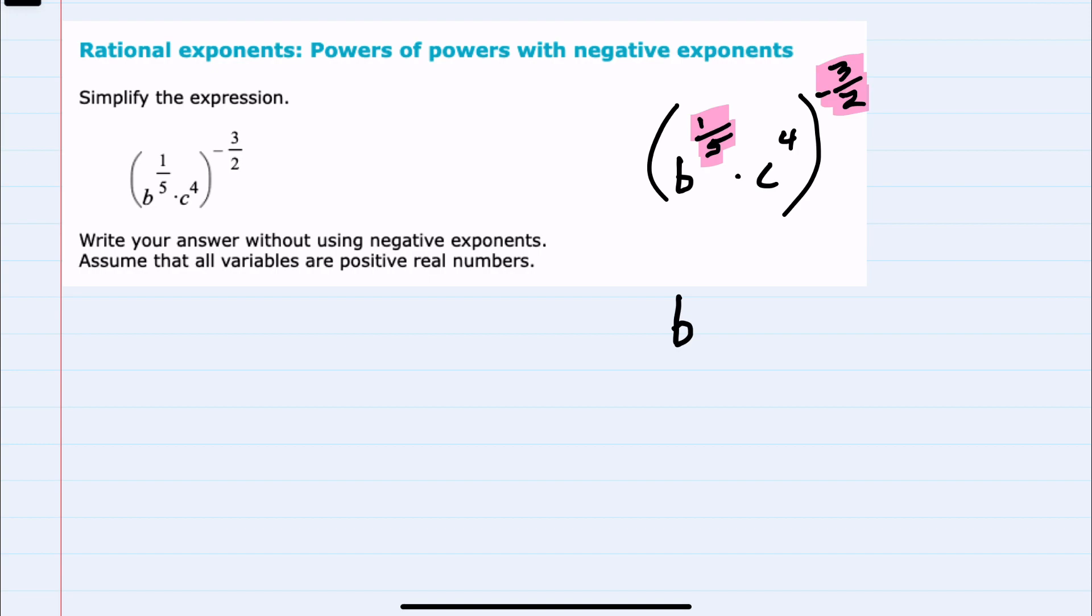So the exponent for B will be the product of one fifth times negative three halves. And we will also keep the base C and multiply its power four with the power outside, which is negative three halves.